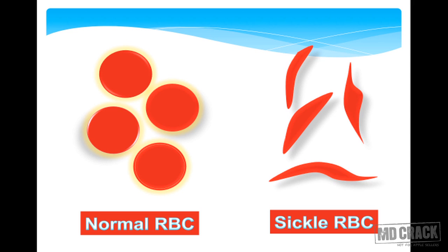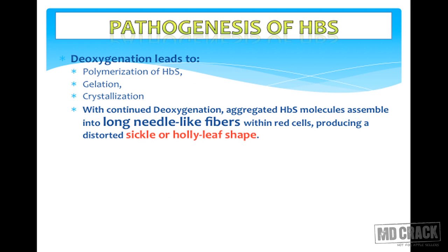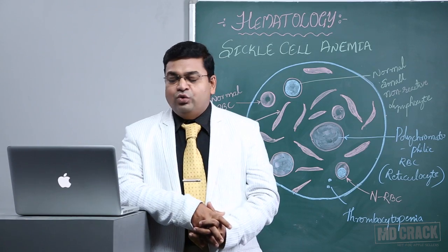Diagrammatically, normal RBCs appear as biconcave discs, whereas irreversibly sickled RBCs have a holy-leaf or sickle appearance. With the point mutation, deoxygenation leads to formation of hemoglobin S, which is very prone to polymerization. It undergoes gelation and crystallization. As deoxygenation continues, more and more aggregates of hemoglobin S molecules assemble within the RBC as long needle-shaped fibers, producing a distorted sickle or holly-leaf shape.